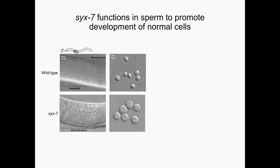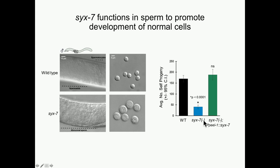So what do these sperm actually look like? These images show the seminal vesicle from male animals with dissected sperm to the right. In a wild-type male, the seminal vesicle is full of small, round spermatids with nuclei visible in the center. However, in 6-7 mutant animals, the seminal vesicle is full of large, abnormal-looking sperm cells. To confirm these defects were cell autonomous, I used the sperm-specific promoter PIL-1 to express 6-7 specifically in sperm cells, and found that this rescued the fertility defects. I also confirmed the sperm looked normal in the rescue line.